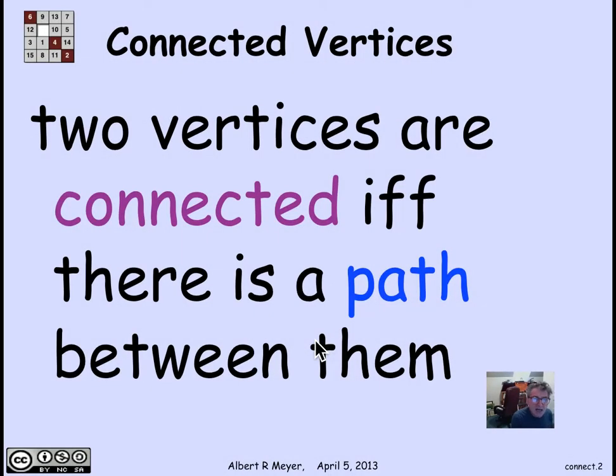Two vertices in a simple graph, or for that matter a directed graph, are said to be connected if and only if there's a path between them. In a directed graph, the path would have a direction. In a simple graph, paths don't have direction, so A is connected to B if and only if B is connected to A. It's a symmetric relation.